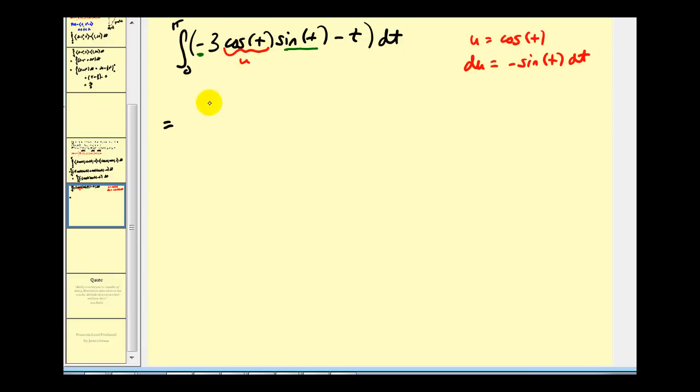We'll have three times U squared over two, or three halves cosine T squared. And then we'll have minus T squared over two.